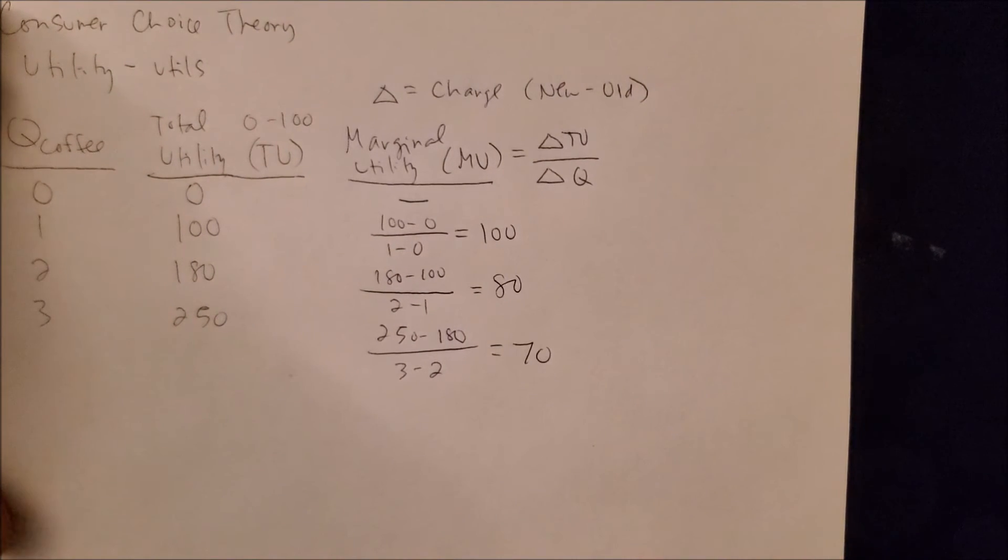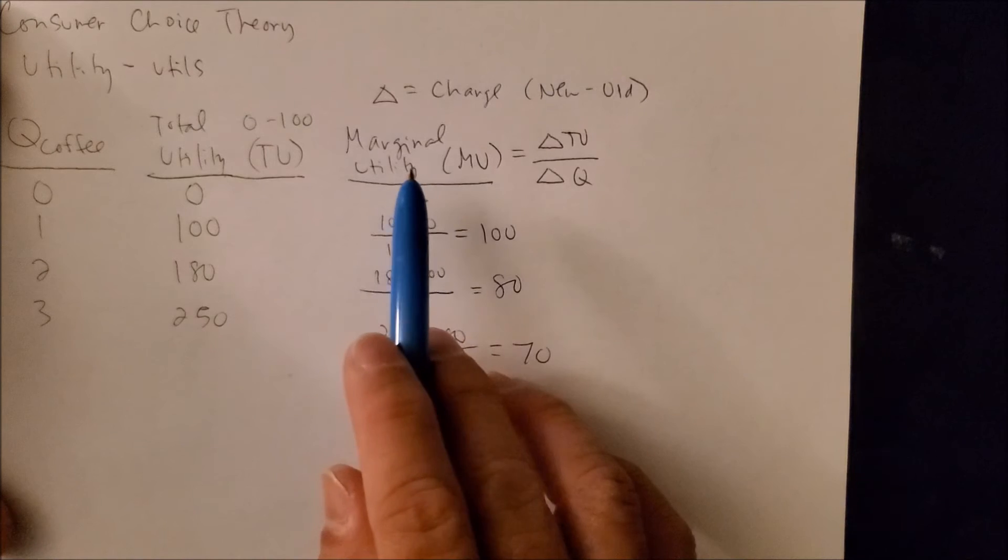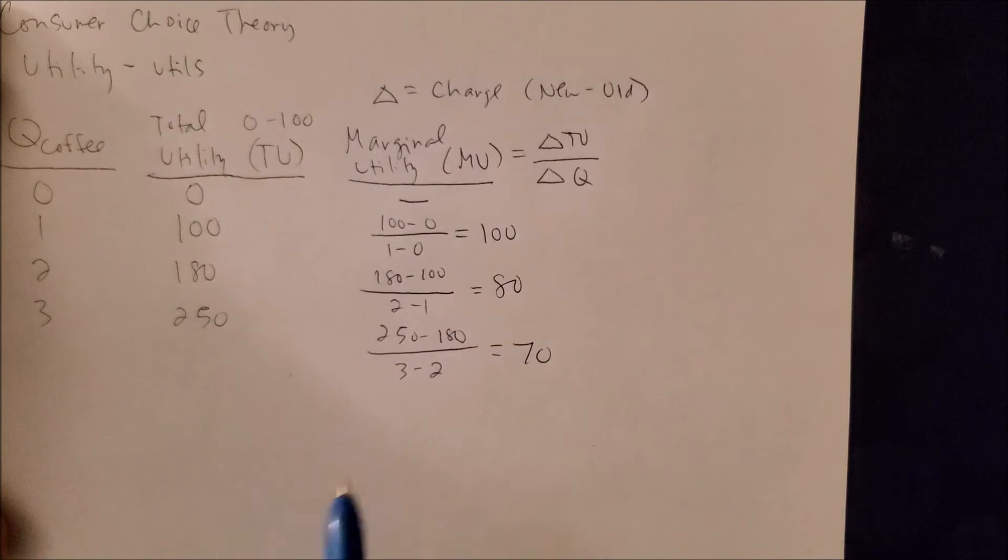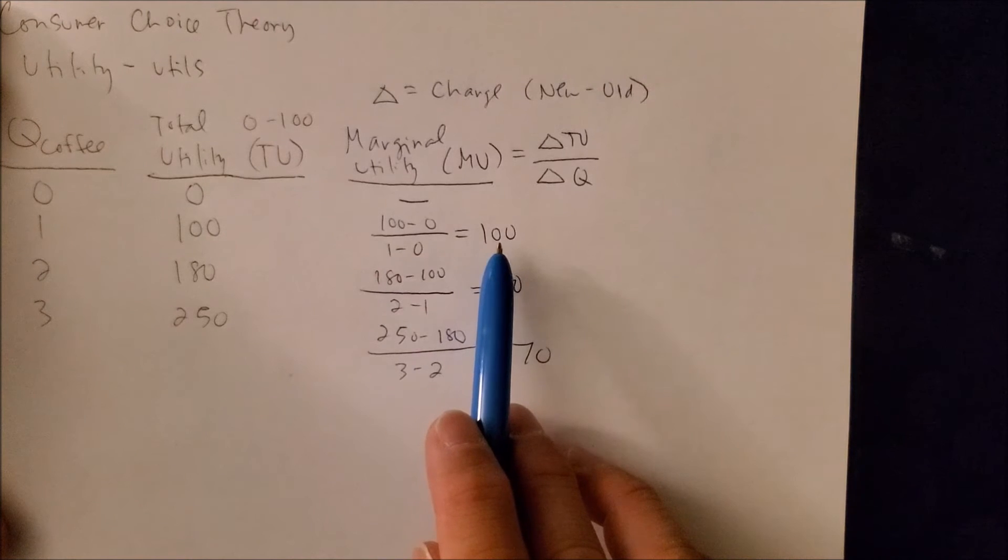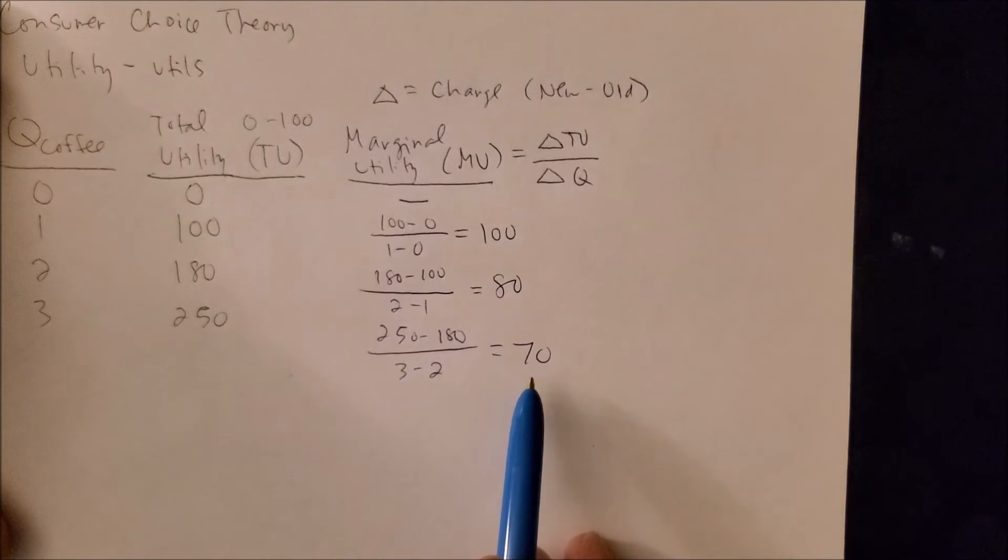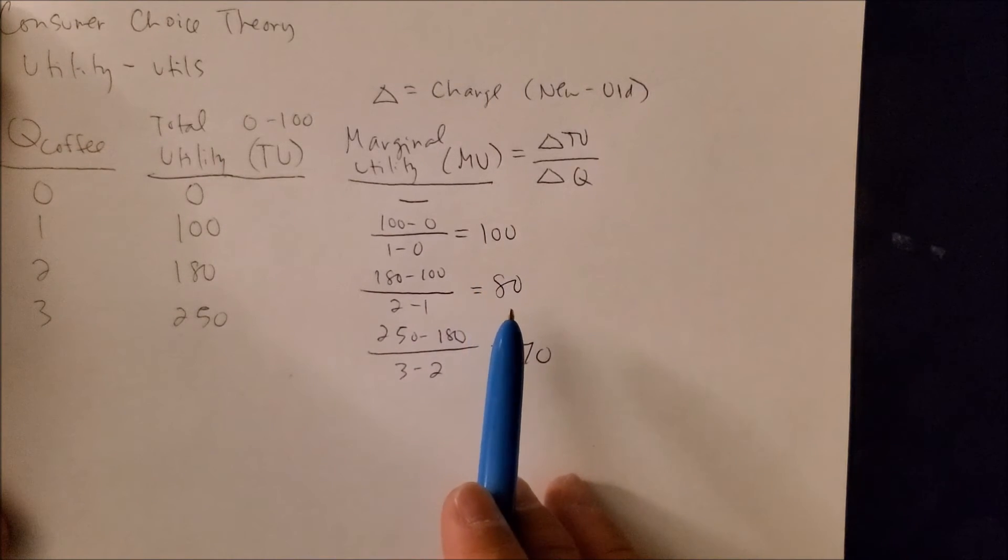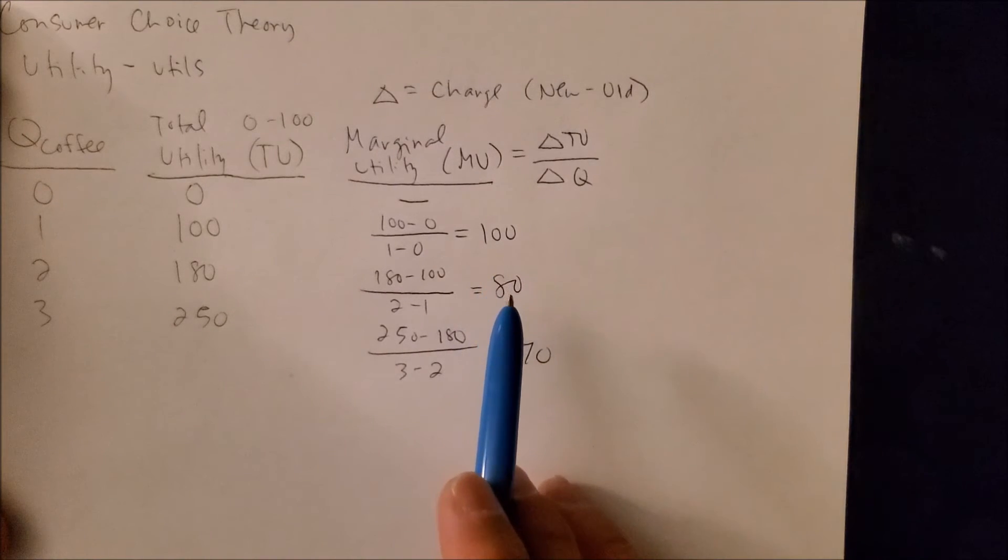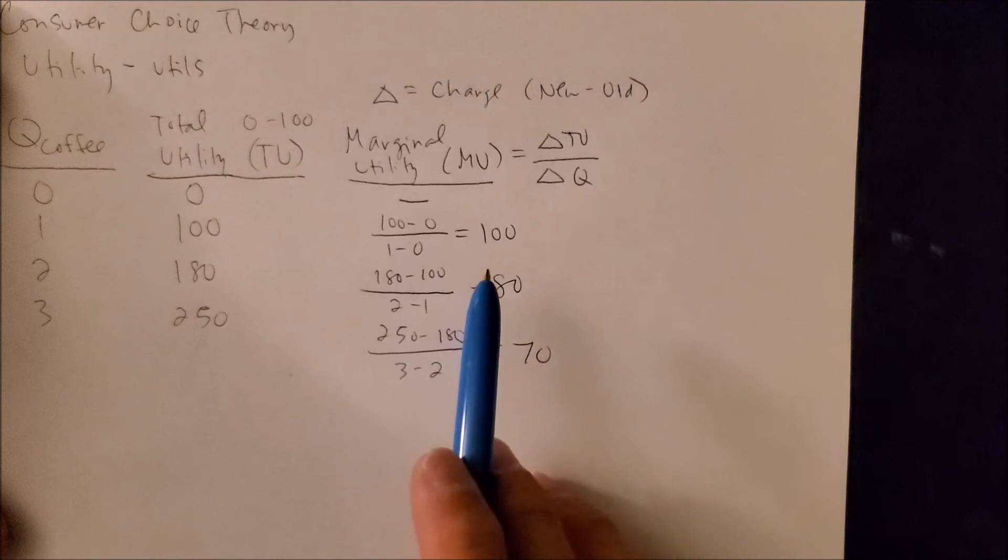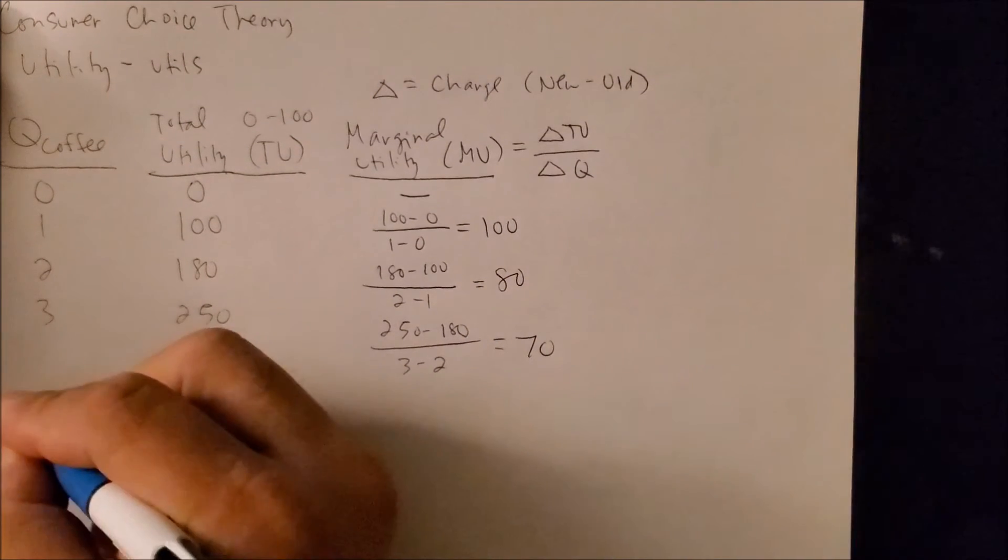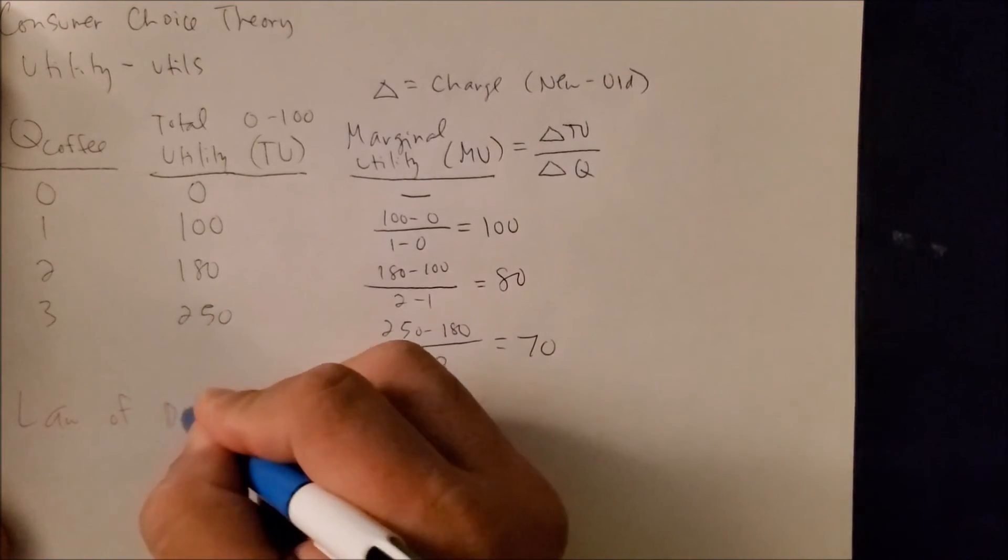But what is more useful however is looking at the marginal utility that says satisfaction you get when you consume one more. And now we can see that as you consume one more, satisfaction is actually diminishing. When you increase consumption by one more cup of coffee, your satisfaction of drinking that cup of coffee is now decreasing.